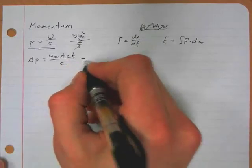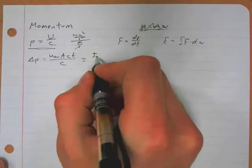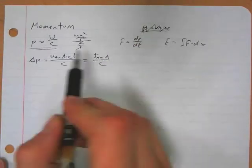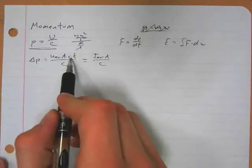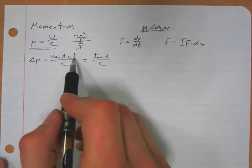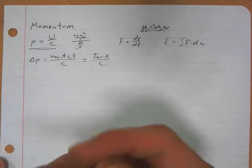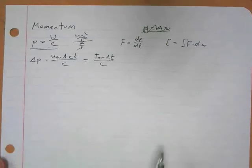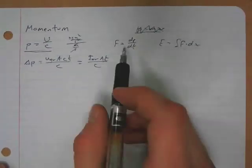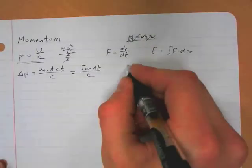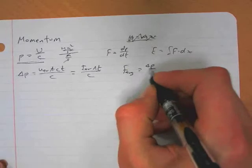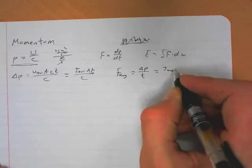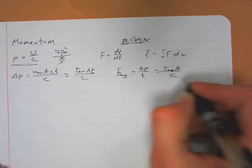Which gives us an average intensity times area over c, because average intensity is just energy density times c. So that's a change in momentum. Now, an average force is dp by dt, so an average force is just delta p over t, which then is just the average intensity times area over the speed of light.